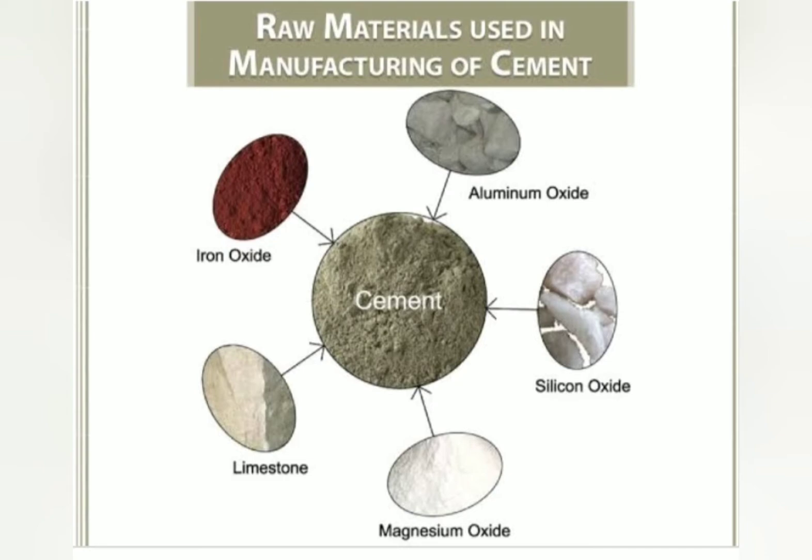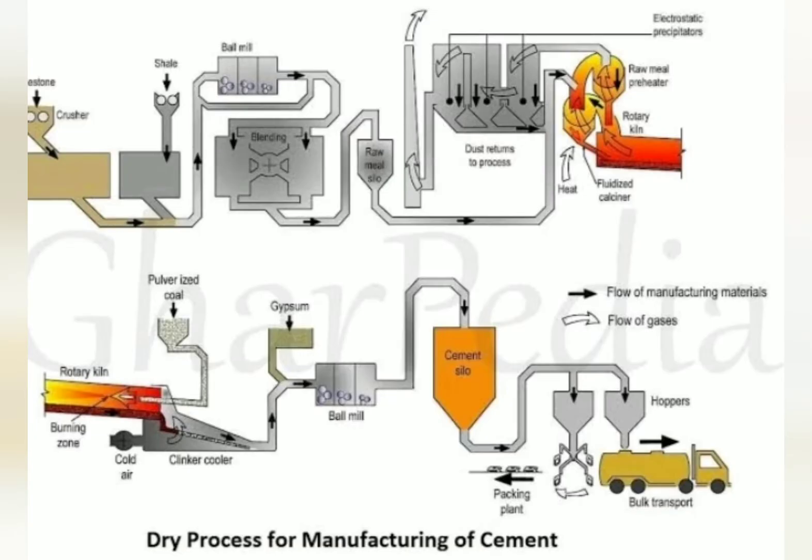The second step in raw material collection involves a dry and wet process. The raw materials are dried in the dry process, and in the wet process, they are processed with water.